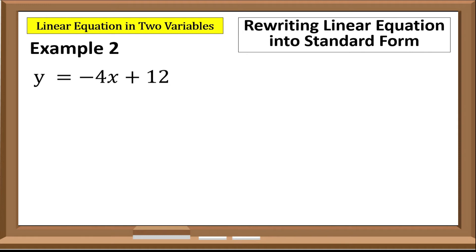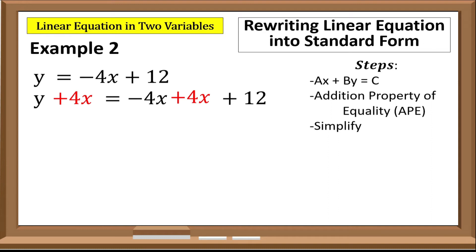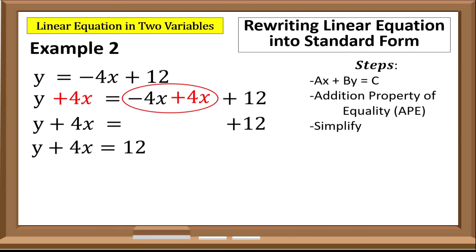As you can observe in standard form, the variables x and y are located on the left side of the equation, and the constant should be on the right side. To transform example two into standard form, we need to transfer negative 4x to the left side by applying the Addition Property of Equality. We add 4x to both sides, then simplify. Negative 4x on the right side is eliminated, so the new equation is y plus 4x equals 12.